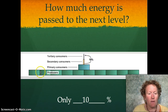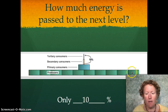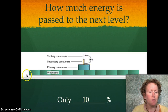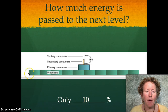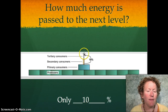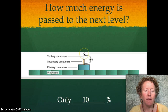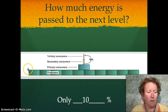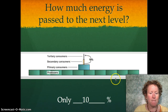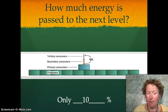You can see that there's a lot of energy captured from the sun by plants, and there's only a tiny bit of that energy that gets all the way up to the top of the food pyramid. Remember that 10%.